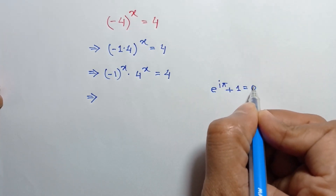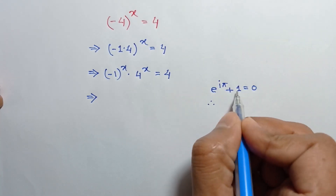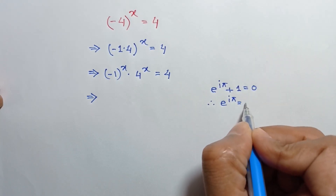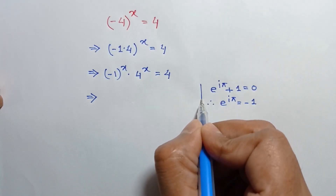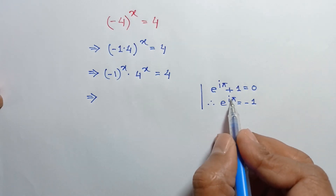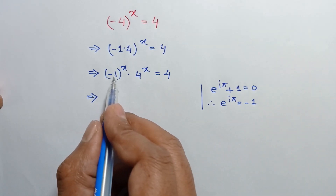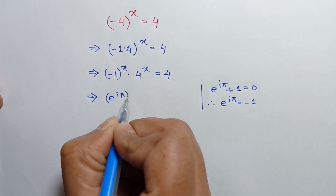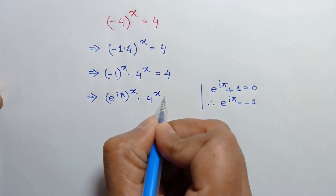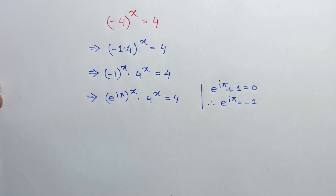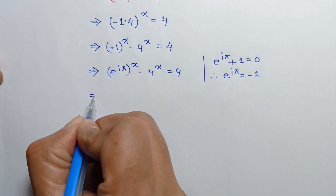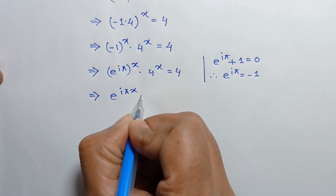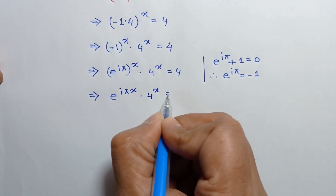So taking this 1 to the right side we will have e to the power i pi is equal to negative 1. Substituting this negative 1 as e to the power i pi, we can write e to the power i pi, whole to the power x, times 4 to the power x is equal to 4, or e to the power i pi x times 4 to the power x is equal to 4.